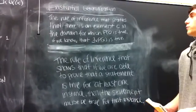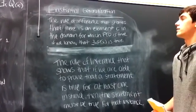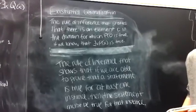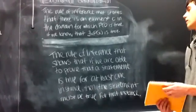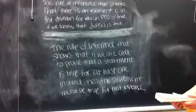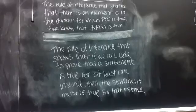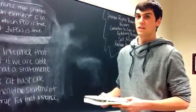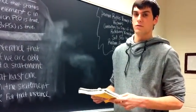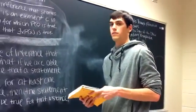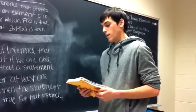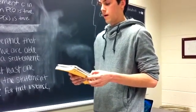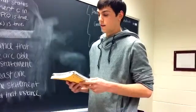For existential generalization, the rule is the rule of inference that states that there is an element c in the domain for which p of c is true, if we know that there exists an x for which p of x is true. So it shows that if we are able to prove that a statement is true for at least one instance, then the statement must also be true for that instance. Unlike universal generalization, in existential generalization, c must be specific as opposed to arbitrary. Going back to the Beatles example, a particular c — the beetles — is given as living in the yellow submarine, and from that we can determine that there exists a group x that lives in the submarine.